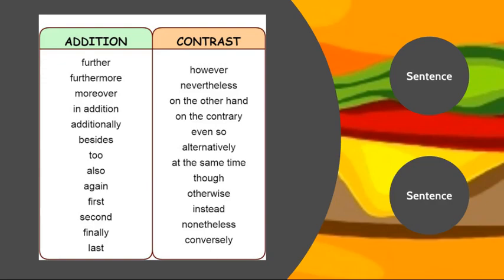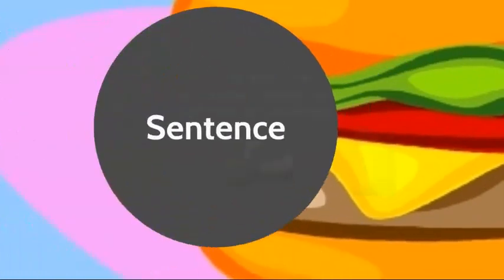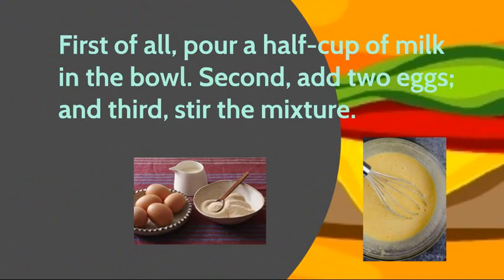Now, I'm going to show you two sentences that use transitional words. First of all, pour a half cup of milk in the bowl. Second, add two eggs. And third, stir the mixture. Over here, I showed sequence of events. My transitional words are first of all, second, and third. And did you notice there is a comma right after every single one of them?